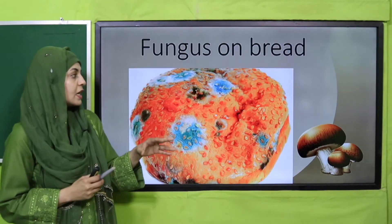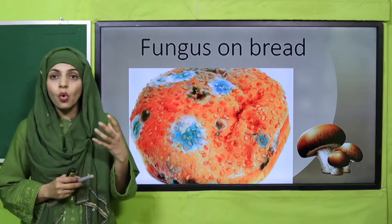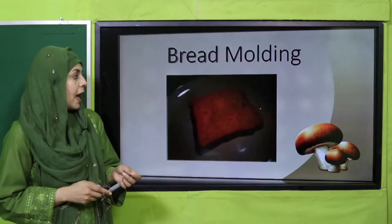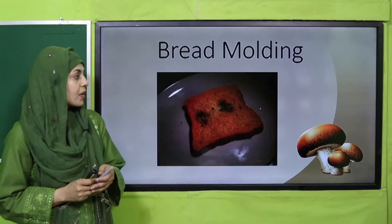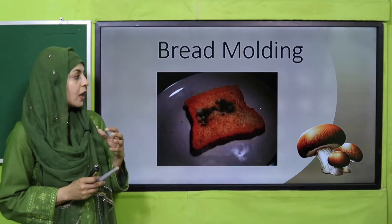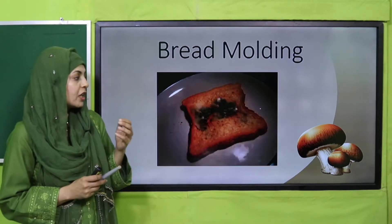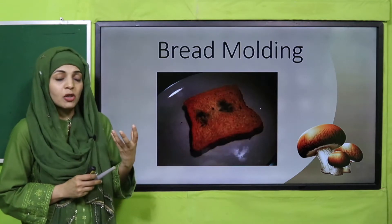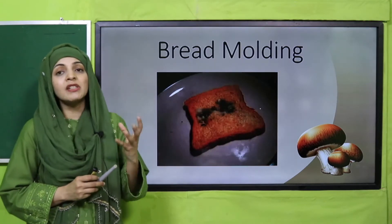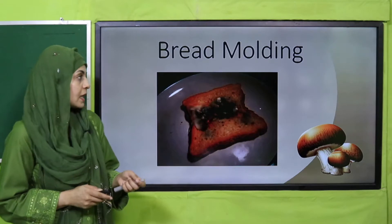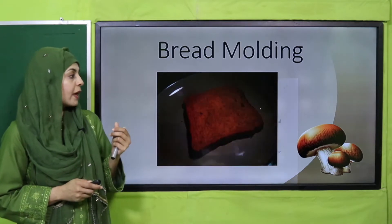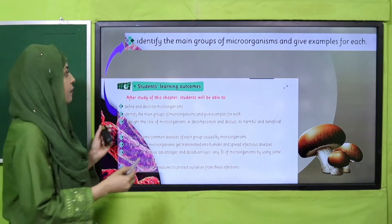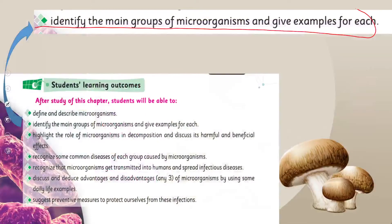Fungus on bread — here you can see that as the bread becomes older, fungus starts growing on it. If you are in a warm place and do not keep it in the fridge, even when it is inside the fridge and the bread is very old, this is bread molding. In today's lecture, students will be able to identify the main groups of microorganisms and give an example for each.